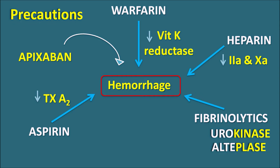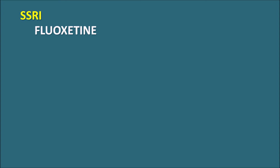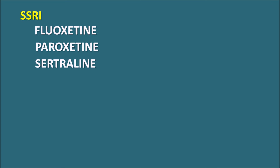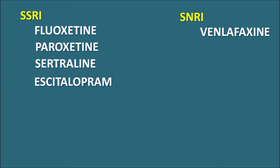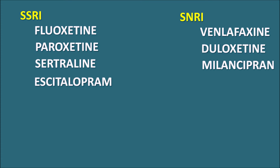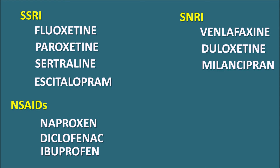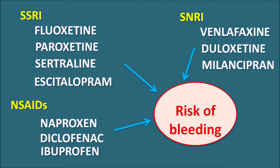Similarly, SSRIs such as fluoxetine, paroxetine, citalopram, and escitalopram — selective serotonin reuptake inhibitors — and SNRIs like venlafaxine, duloxetine, and milnacipran, and NSAIDs like naproxen, diclofenac, and ibuprofen — all these categories of drugs can increase the risk of bleeding. When these drugs are simultaneously used, apixaban can produce severe bleeding in patients.